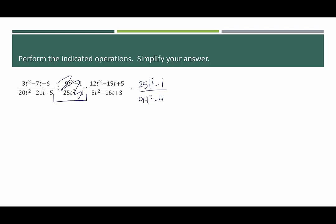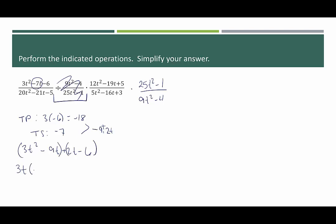So here we have 3t squared minus 7t minus 6. The target product is 3 times negative 6, which is negative 18, and the target sum is negative 7. Two numbers that multiply to negative 18 and add up to negative 7 are negative 9 and positive 2. So we replace minus 7t with negative 9t plus 2t, giving 3t squared minus 9t plus 2t minus 6. Factoring by grouping: 3t times t minus 3, plus 2 times t minus 3, giving t minus 3 times 3t plus 2.